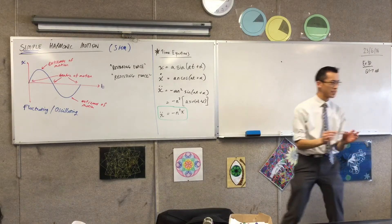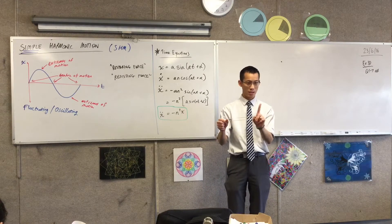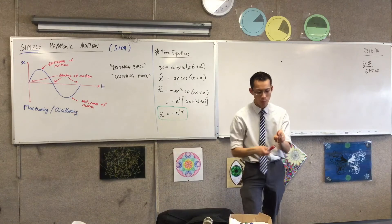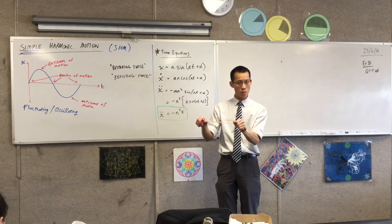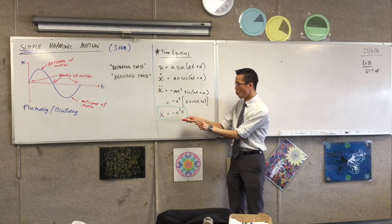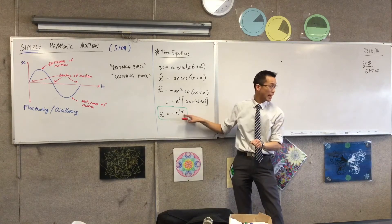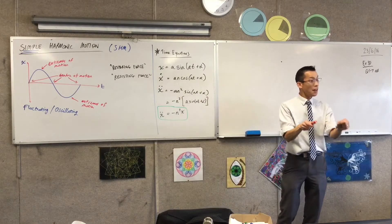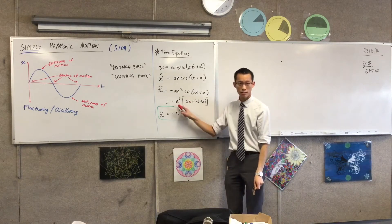What does this mean physically? I've got my object moving away from the center of motion. As I move further and further away from the center in a particular direction — let's call this the negative direction, to the left — what does that tell me about the acceleration? The further you get away, the bigger this number gets, which means the bigger the acceleration gets — in the other direction, back towards the center. Because if the displacement is negative, the acceleration term is positive.